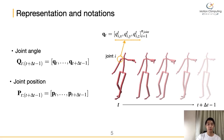Before introducing the motion manifold structure, let's define the motion representation and notation. A motion with the time range of t to t plus delta-t minus 1 is written as large Q_t, where small q_t denotes the pose at time t. A pose is represented with the set of joint angles written in exponential coordinates. The yellow line in the figure indicates the three components of the exponential coordinates, and n_joint is the number of joints. Small p_t is the pose represented with the joint position at time t, corresponding to q_t.